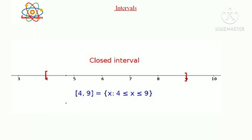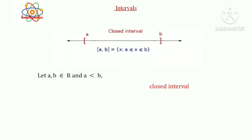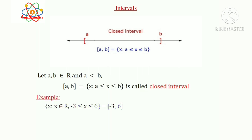It is called a closed interval. Let a, b ∈ R and a < b. Then the set {x such that a ≤ x ≤ b} is called a closed interval. It is denoted by closed interval [a, b]. So [a, b] = {x such that a ≤ x ≤ b}. Example: {x such that x ∈ R and -3 ≤ x ≤ 6} can be expressed in interval form as [-3, 6]. That is, -3 and 6 are included in the set.